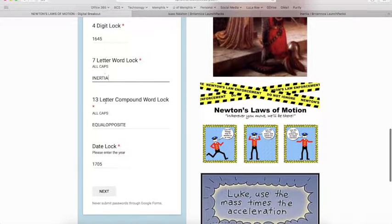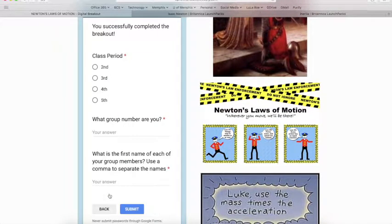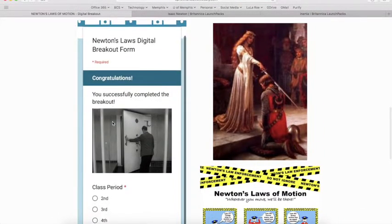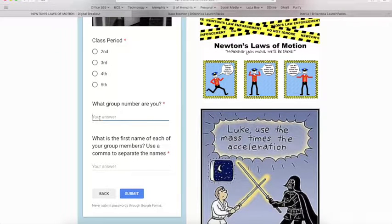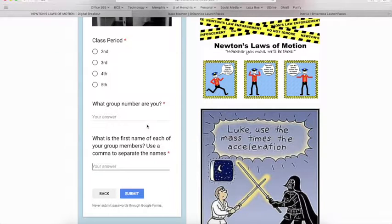Okay so all of them are open and I can press next. I successfully broke out and then I fill out the form with what period. We're going to put them in groups just to help with figuring out who won and the first name of each person. And then I submit my form.